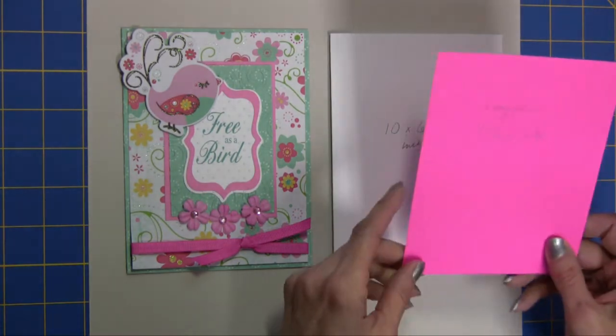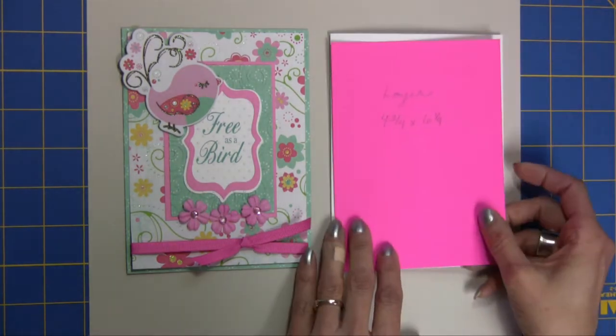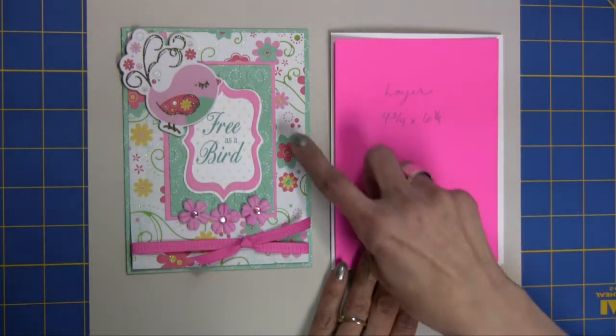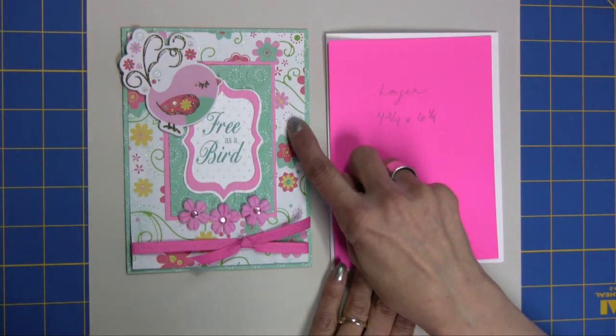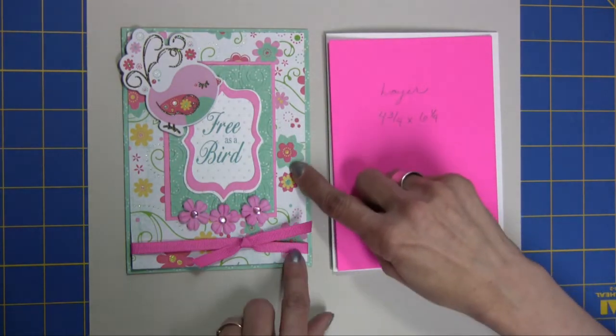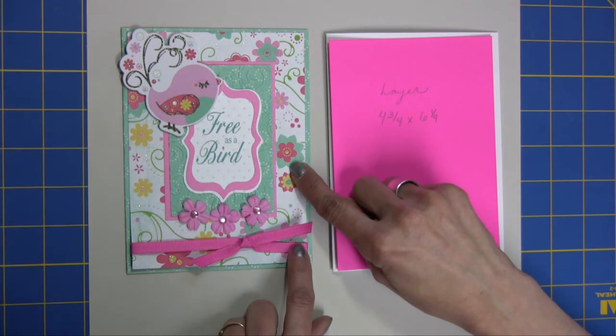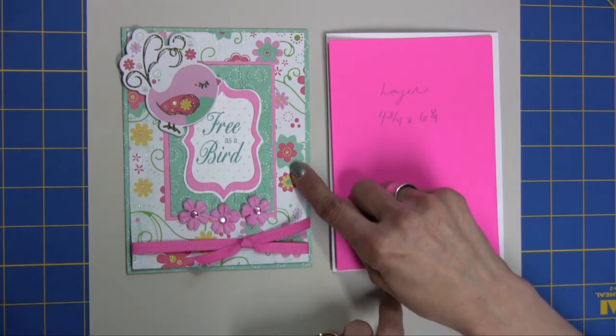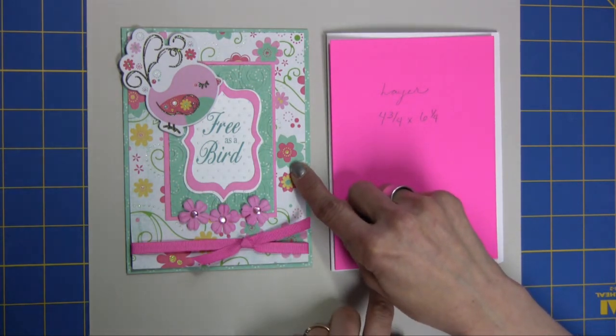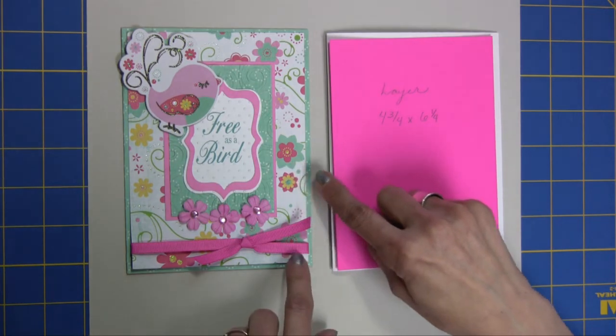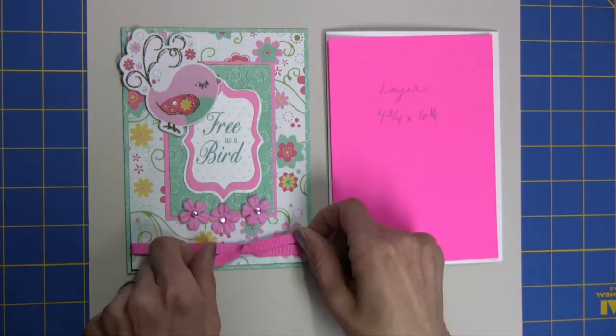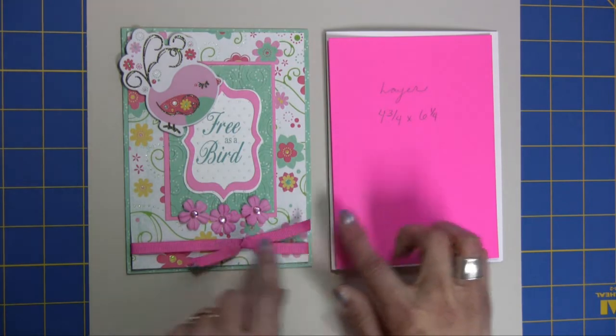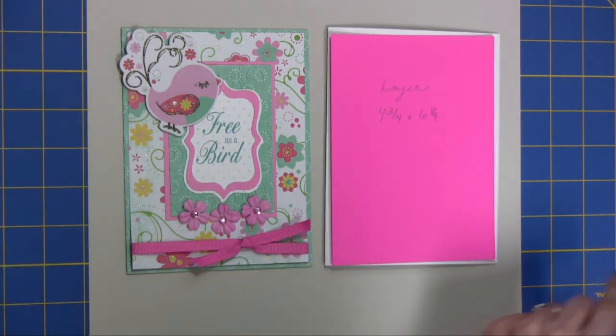Then, the next layer of our card is four and three quarters by six and a fourth. This particular paper is the Twinkle Twirls Glitter Paper. All of the papers today are going to be from the Lucy Bird Collection. Before attaching this layer, I tied a ribbon in a simple knot and then went ahead and attached it.